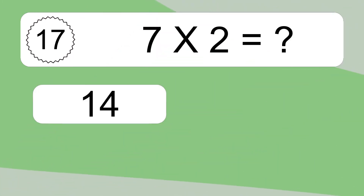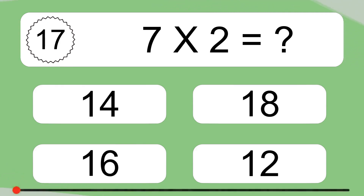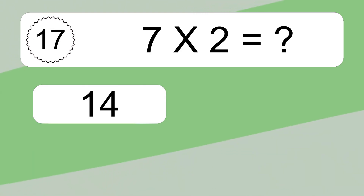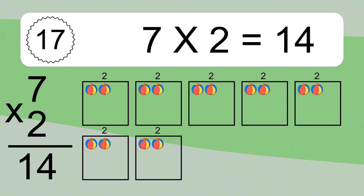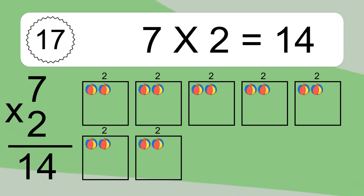7 times 2 equals what? 7 times 2 equals 14.